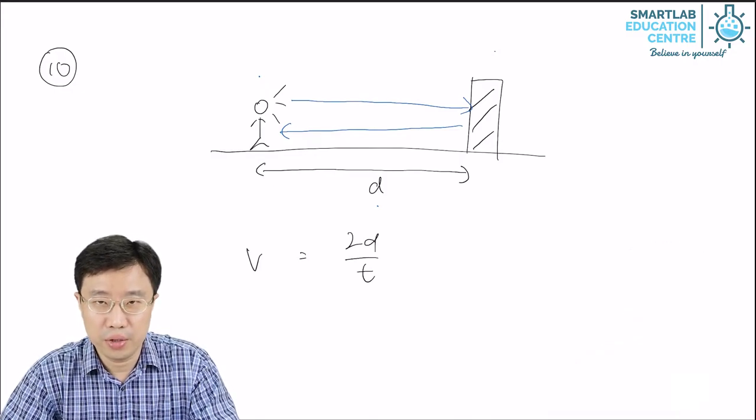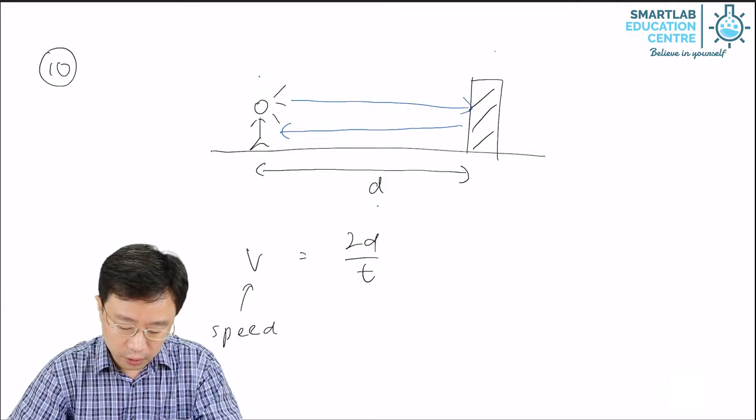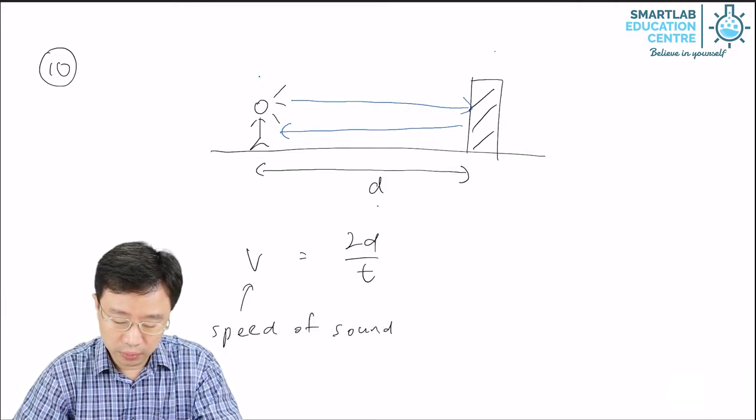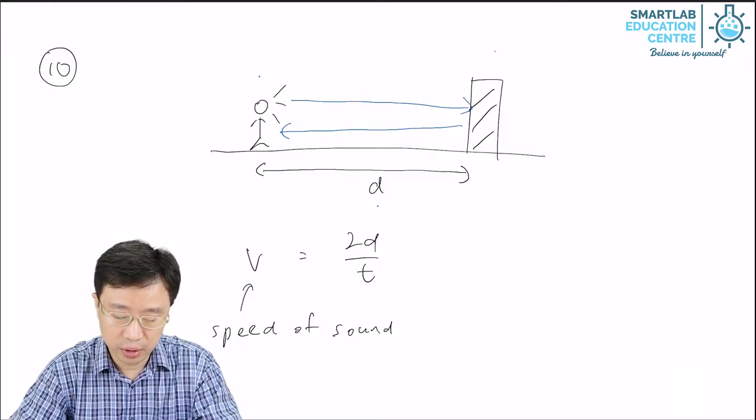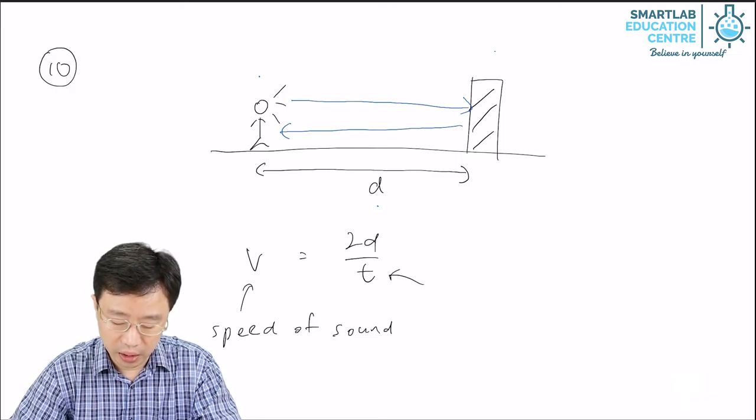This formula, as you can see, is V, the speed of sound, equals 2D, double the distance between the source of the sound and the reflecting surface, divided by T.